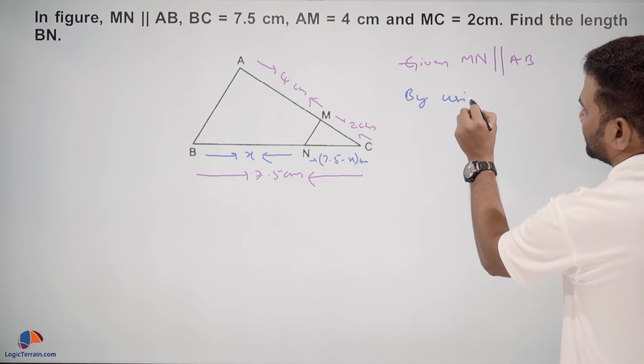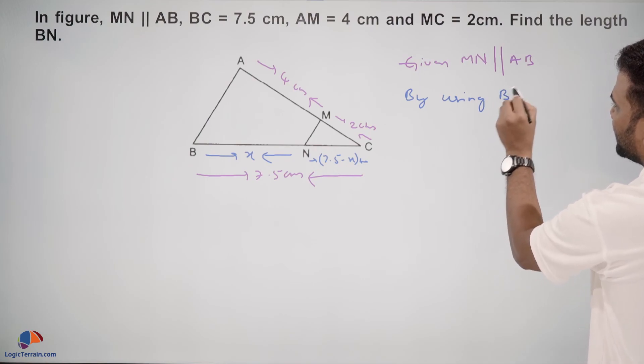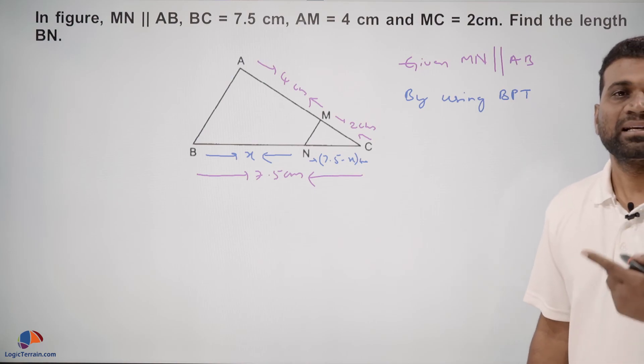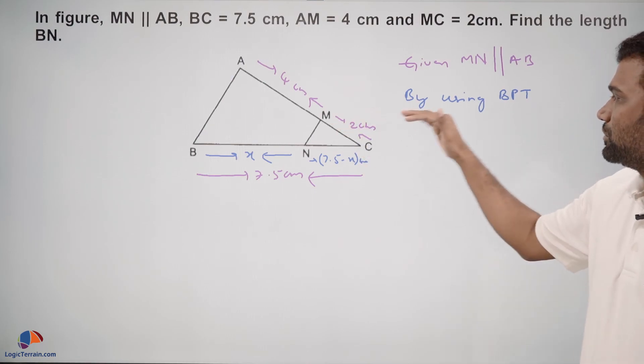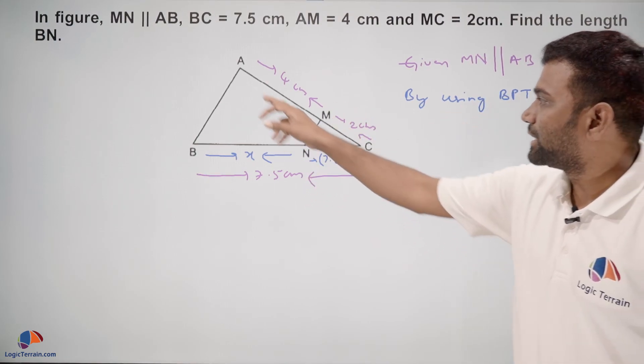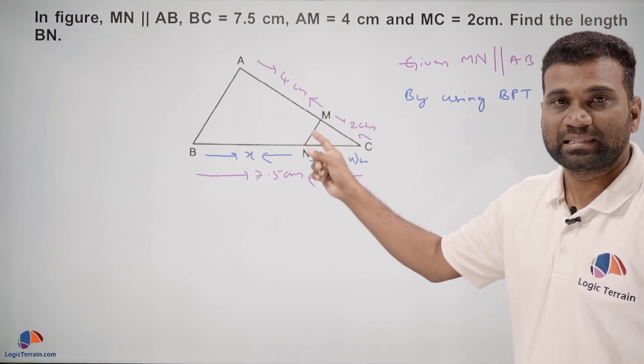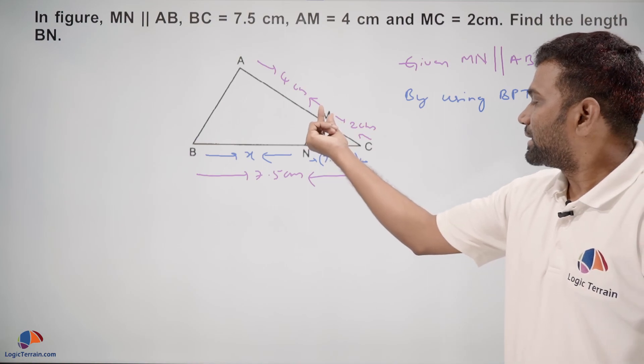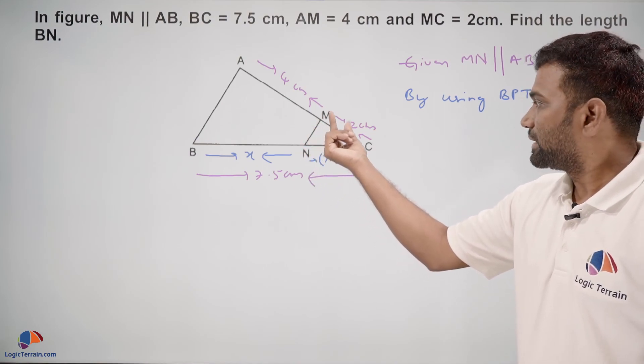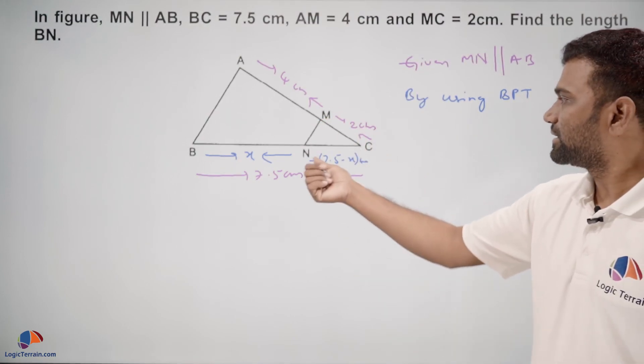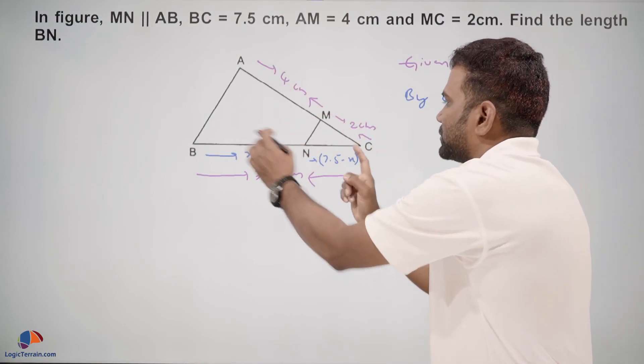By using BPT, also called Thales Theorem: if a line is drawn parallel to one side of a triangle and intersects the other two sides at two points, then that line divides the other two sides in the same ratio.